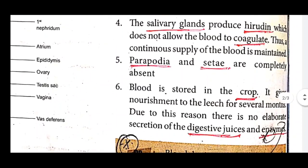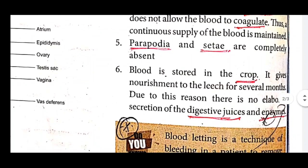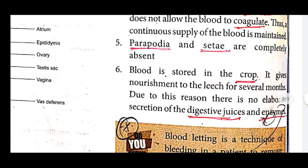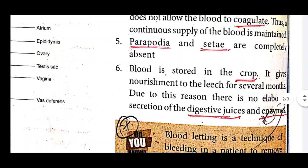The blood is stored in the crop. It gives nourishment to the leech for several months. For this reason, there is no elaborate secretion of digestive juice and enzymes.